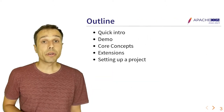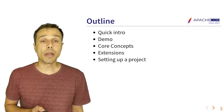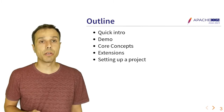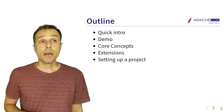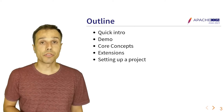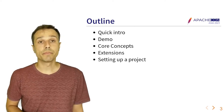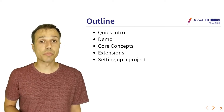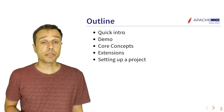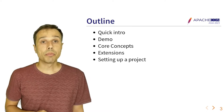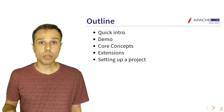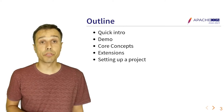Today we're going to do the following: we're going to get a quick intro and have a basic grasp of what Apache Sling is all about. Then we're going to see a demo so we can anchor these concepts in something more visual, and then we'll get to the core concepts and a couple of useful extensions. In the end, we'll wrap it all up by seeing how to set up a production-ready project with Apache Sling.